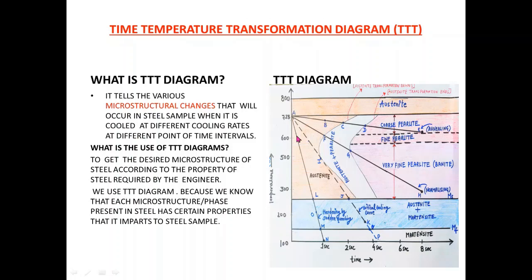The purpose of the TTT diagram: when a steel sample cools slowly it undergoes changes in microstructure, and these microstructures have an effect on the properties of steel. The various microstructures obtained depend on the cooling rate, so the TTT diagram tells us what rate of cooling we should adopt to get the desired microstructure so that we have the desired properties.